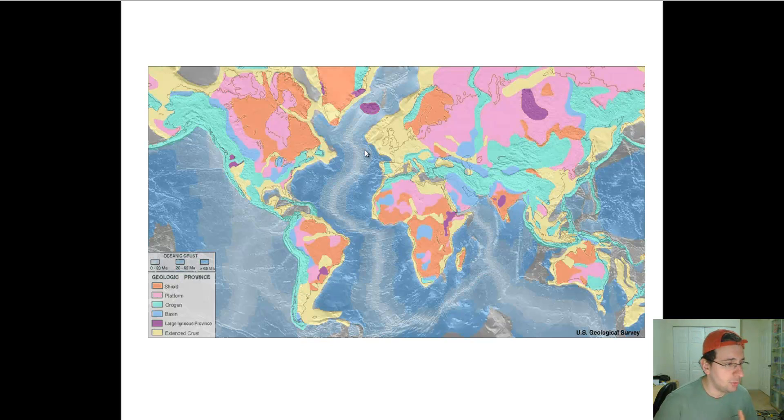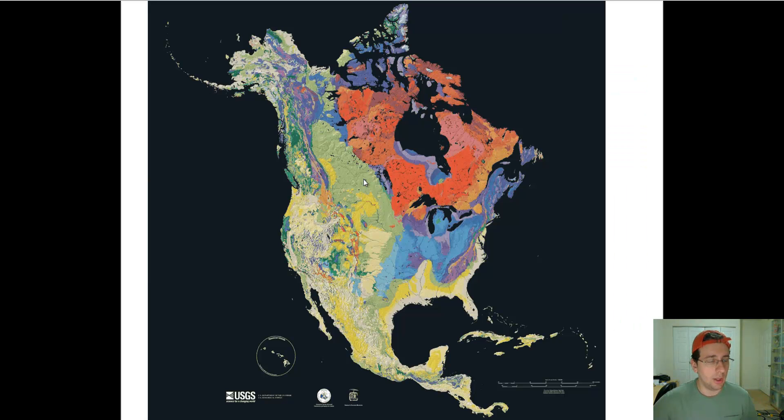So you have shields, platforms, orogens, basins, domes, terranes, extended crust, and large igneous provinces. All of these things are going to be put together to actually make a continent. If you, for example, look at North America, you will realize that it's actually built of several different pieces of geological material that have been around for thousands of years and some have been younger. And so looking at North America, it's a good example to see that each piece of rock has its own geological history.